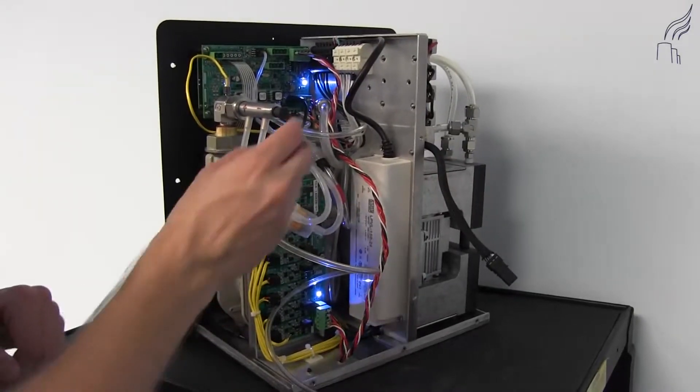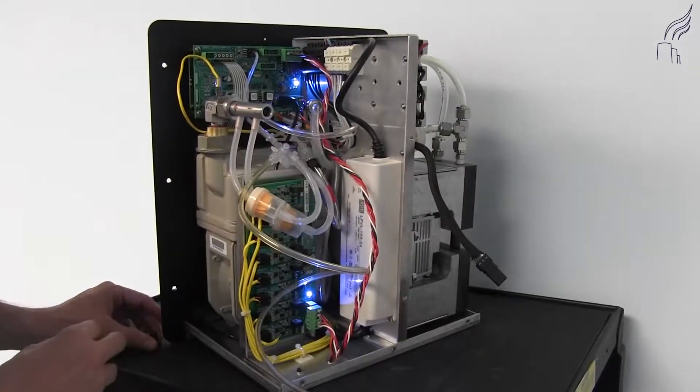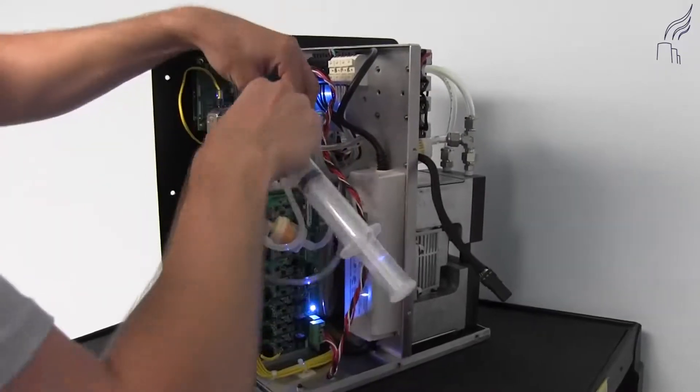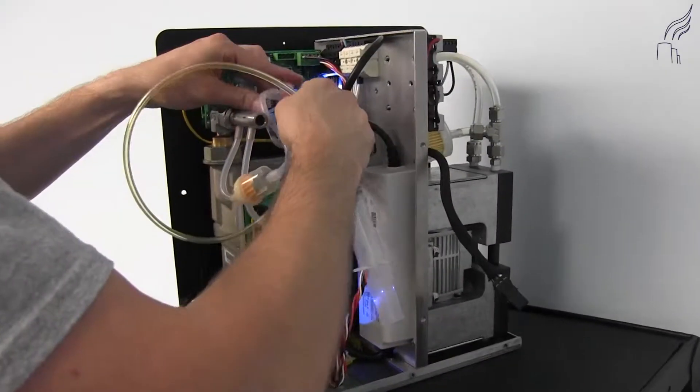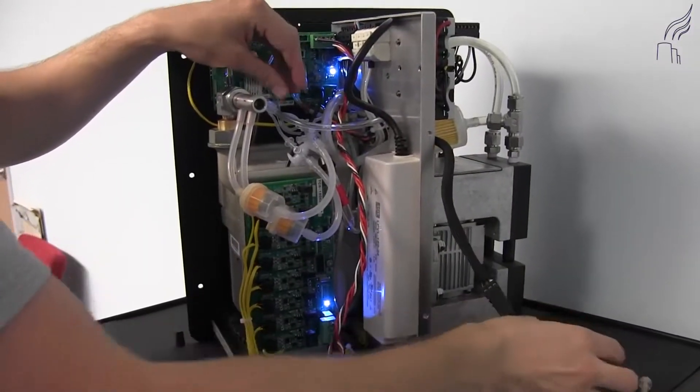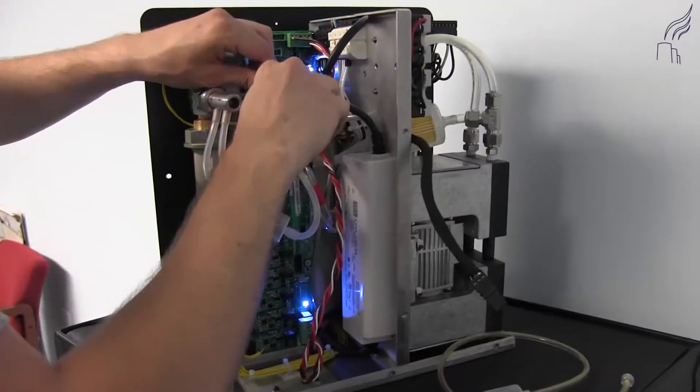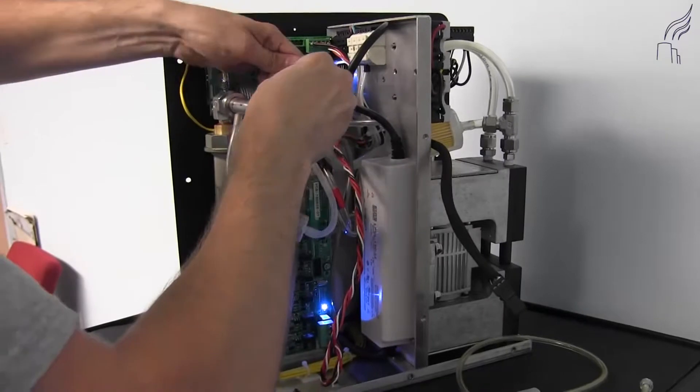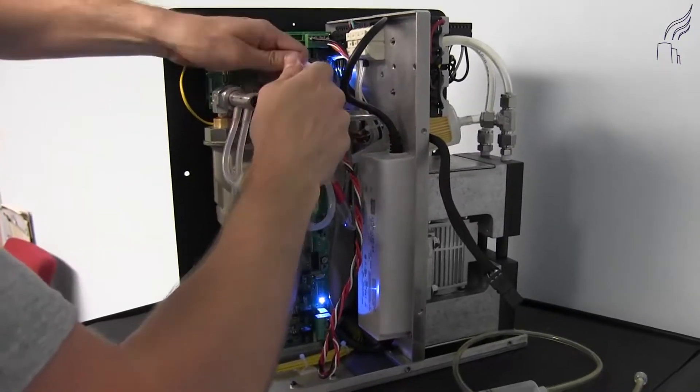Once you've completed your leak check you can remove the stopper, remove your syringe, and remove your connectors and replace them to the original orientation.